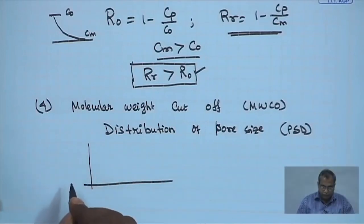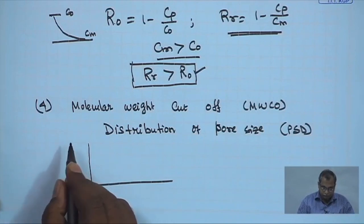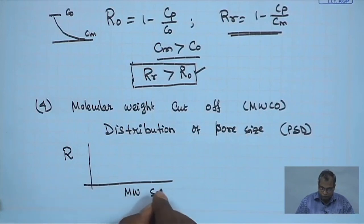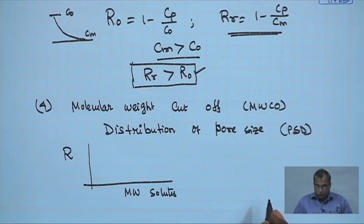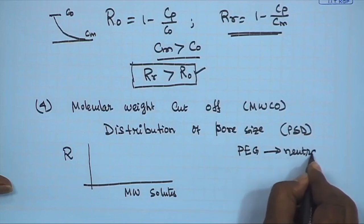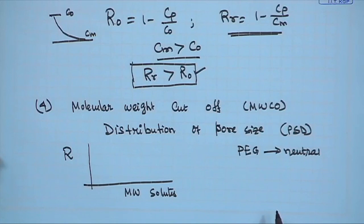The pore size distribution is calculated by measuring the retention versus molecular weight of solutes. We conduct an experiment using several solutes of different molecular weights, but these solutes have to be neutral solutes. An example of neutral solutes is polyethylene glycol. Polyethylene glycol is a neutral polymer — we have to take neutral polymers, for example polyethylene glycol, polyvinyl pyrrolidone, etc. This polyethylene glycol polymer is available with different molecular weights.